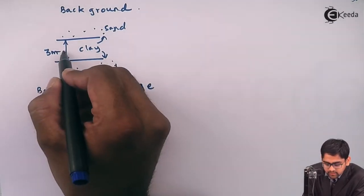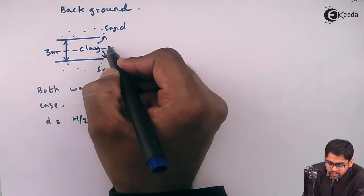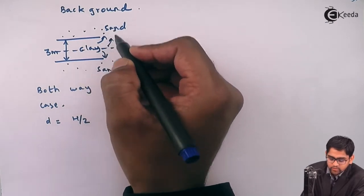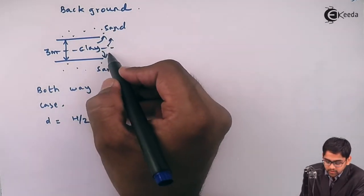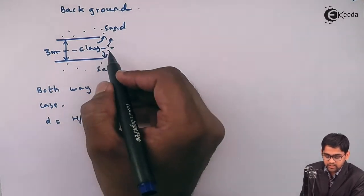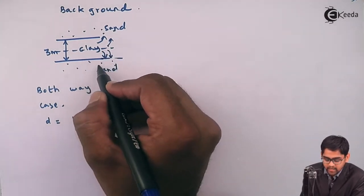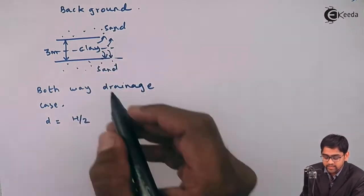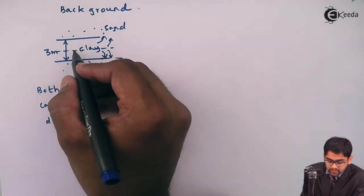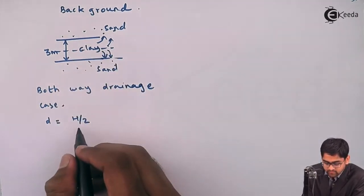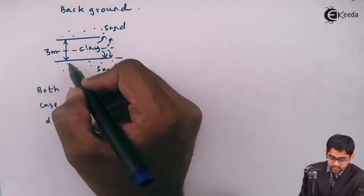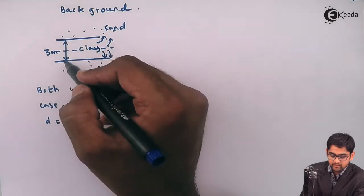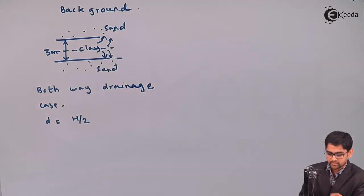From the center of the clay layer, water will drain upward toward the top sand layer and downward toward the bottom sand layer. Therefore, the drainage thickness becomes H by 2. But if it were a single drainage case, the drainage distance D would equal the total thickness of the clay layer. So D becomes 1.5 meters.